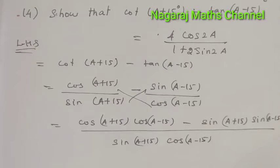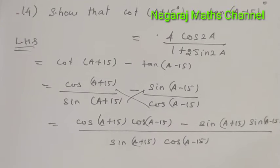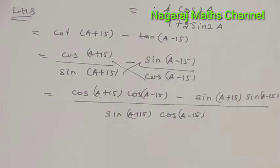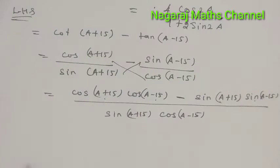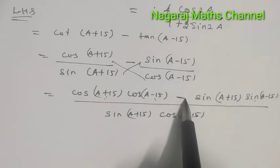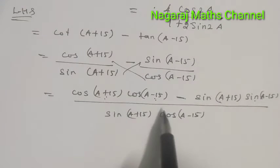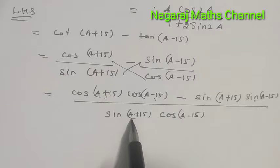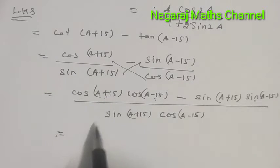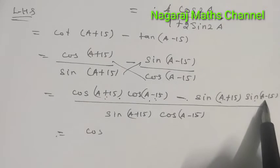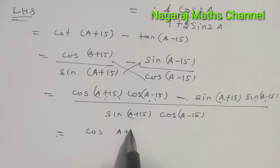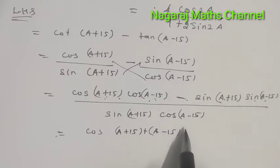Now let's use the formula. The formula is cos A cos B - sin A sin B. Applying this formula to A+15 and A-15 gives us the numerator.